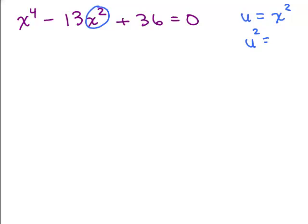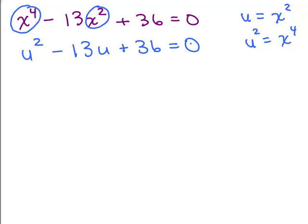If u equals x squared, then u squared equals x squared times x squared, which is x to the fourth. So we replace x to the fourth with u squared and x squared with u. Look at what this looks like: u squared minus 13u plus 36 equals 0. Now it looks like a standard quadratic equation — that's our goal. This isn't the only technique, but it's one approach.